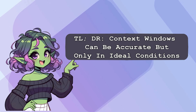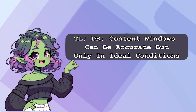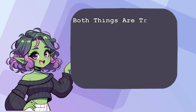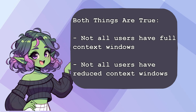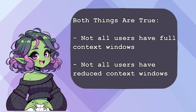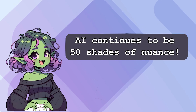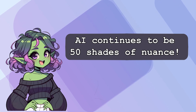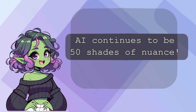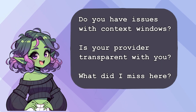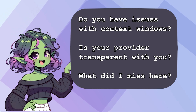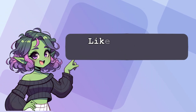When skeptics claim that context windows beyond 32k are a myth, they're not entirely wrong. Without back-end access to verify these claims, it's easy to see why these ideas persist. AI operates in a strange, often contradictory space — both things can be true at once. Context windows are real, but their performance isn't always guaranteed. They're impacted by traffic, computational resources, hidden prompts, and countless other variables. Have you struggled to get AI to read large files? Do you think 128k context is a myth, or do you trust the claims by big tech? Let us know in the comments.